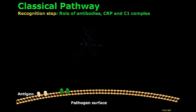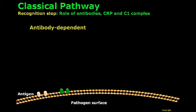C1 will bind to pathogens indirectly by two mechanisms. The first mechanism requires antibodies to be bound to the surface of pathogens — this is what we call antibody-dependent recognition of danger. Since the classical pathway requires antibodies, which are produced by B cells, in order to start, the classical pathway is considered to be the link between the adaptive and the innate immunity.